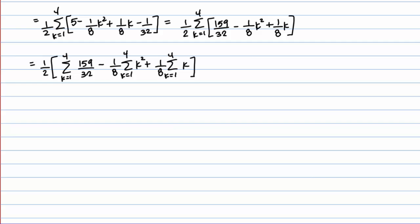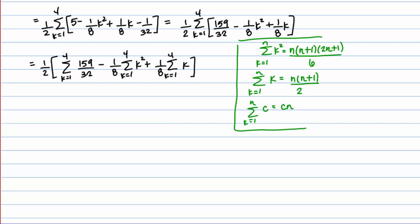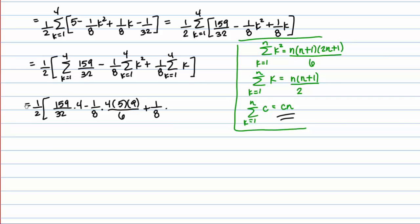Let's review the summation formulas and apply them. The sum of the constant 159 over 32 is just that constant times n, and n is 4, so 159 over 32 times 4. Minus one eighth, then for k squared with n equals 4: n is 4, n plus 1 is 5, 2n plus 1 is 9, all over 6. Plus one eighth, then the sum of k: 4 times 5 over 2. Now we just need to evaluate this — you could put it in your calculator or work it out by hand. If you work that out, you should get 8.6875.